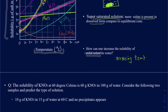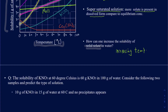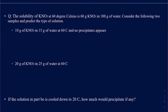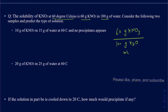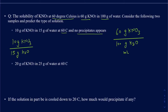Now let's look at how to determine if a solution is saturated, unsaturated, or supersaturated. The solubility of KNO₃ at 60°C is 60 grams per 100 grams of water. In the first situation: 10 grams of KNO₃ in 15 grams of water at 60°C with no precipitate appearing. I'll write that as 10 grams KNO₃ divided by 15 grams of water, and compare it to the solubility of 60 grams per 100 grams of water.